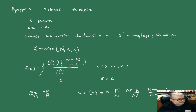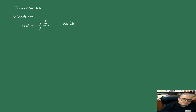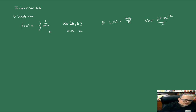Estas son distribuciones discretas. Vamos a hablar de algunas continuas. Distribuciones continuas: primero empezamos con la uniforme continua. La función de densidad va a ser 1/(b−a) — es decir, 1 sobre el tamaño del intervalo que estamos considerando — para X en el intervalo [a,b], y 0 en otro caso. La esperanza es el punto medio (a+b)/2, y la varianza es (b−a)²/12.